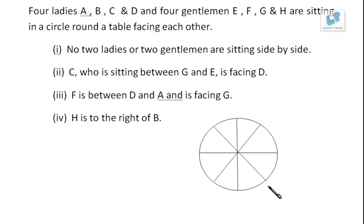Now we start filling the positions. From the first set: no two ladies or two gentlemen are sitting side by side - fine, let's proceed to the next instruction. C who is sitting between G and E is facing D. So that means suppose I assume C to be here, he is facing D, that means D is over here, and C is sitting between G and E, so I assume G here and E here.